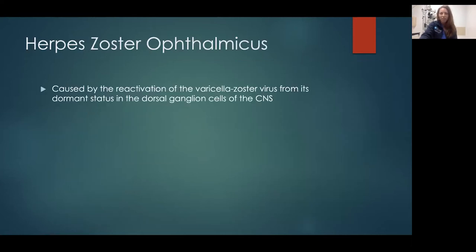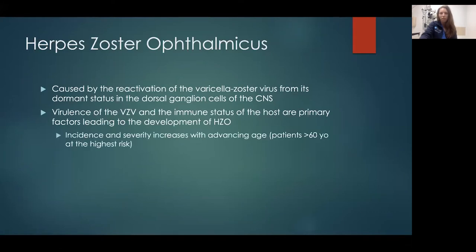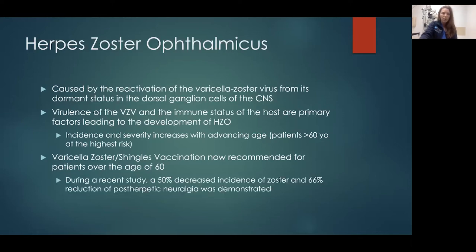Herpes zoster ophthalmicus is caused by reactivation of zoster from its dormant status in the dorsal ganglion cells of the CNS. The virulence and immune status of the host are the primary factors. We see it often in HIV patients or really elderly, sick, immunocompromised patients. It's also becoming more common in patients over 60 years of age, and severity in older patients is higher than in younger patients. With the use of the vaccine, we've seen a reduction — a recent study showed a 50% decrease in incidence of zoster and less than 70% reduction of post-herpetic neuralgia.